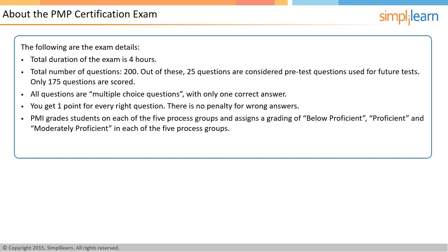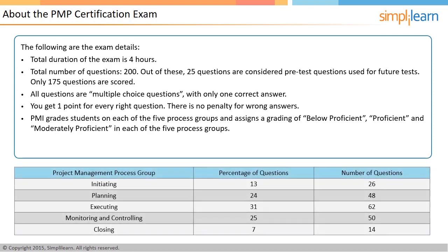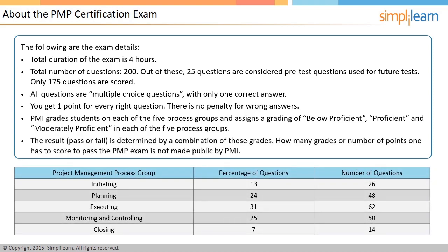PMI grades students on each of the five process groups and based on the grading, they declare a pass or fail. The grades are not disclosed; rather, a rating is given. The ratings are below proficient, proficient, and moderately proficient in each of the five process groups. The pass or fail result is determined by a combination of these grades. How many points one has to score to pass the PMP exam is not made public by PMI.